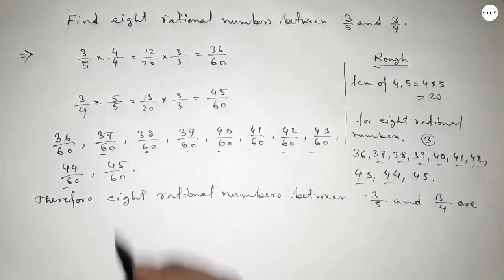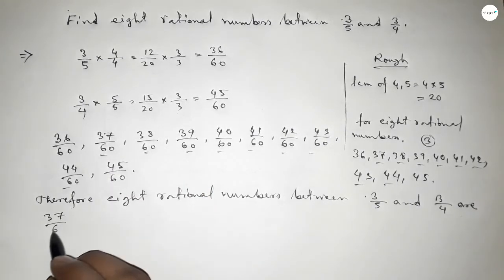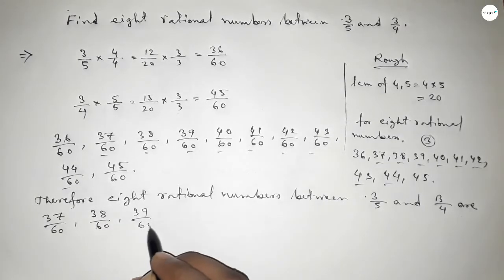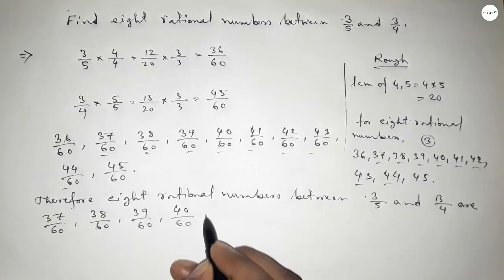The eight rational numbers between 3 over 5 and 3 over 4 are: 37 over 60, 38 over 60, 39 over 60, 40 over 60, 41 over 60, 42 over 60, 43 over 60, and 44 over 60.